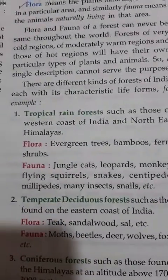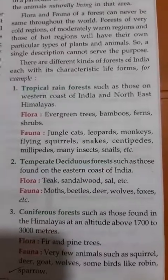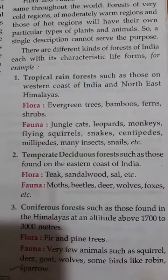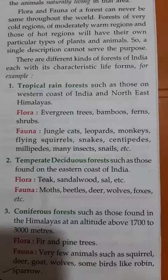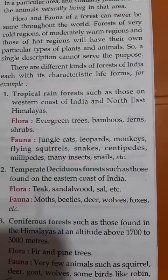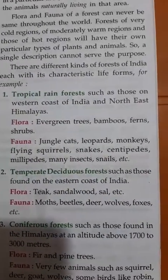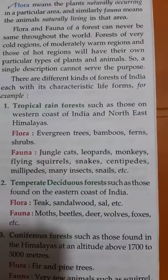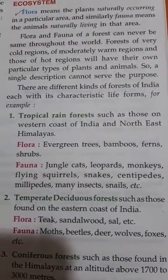Now the different types of forests — there are three types. First, tropical rainforests, found on the western coast of India and the northeast Himalayas. The flora includes evergreen trees, bamboos, ferns, and shrubs. These are the naturally occurring plants of tropical rainforests.